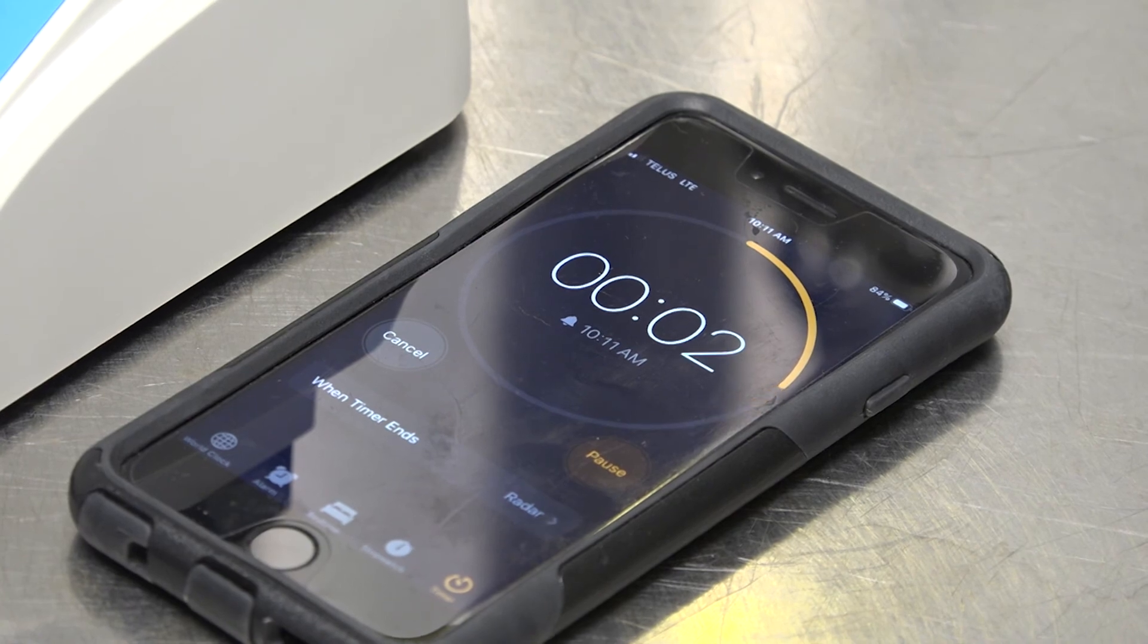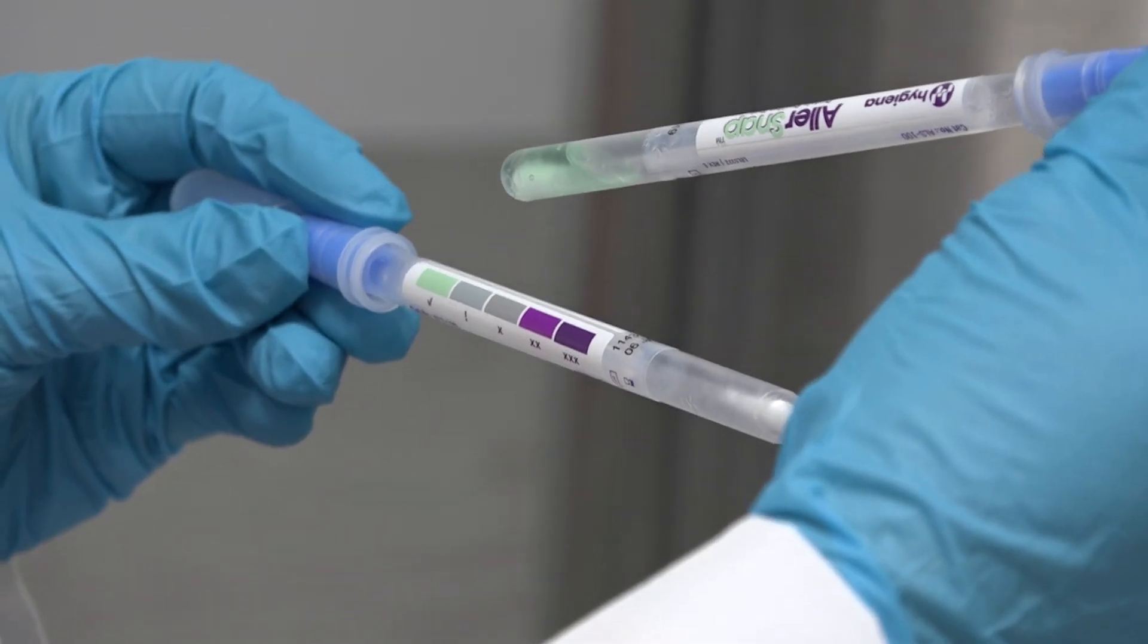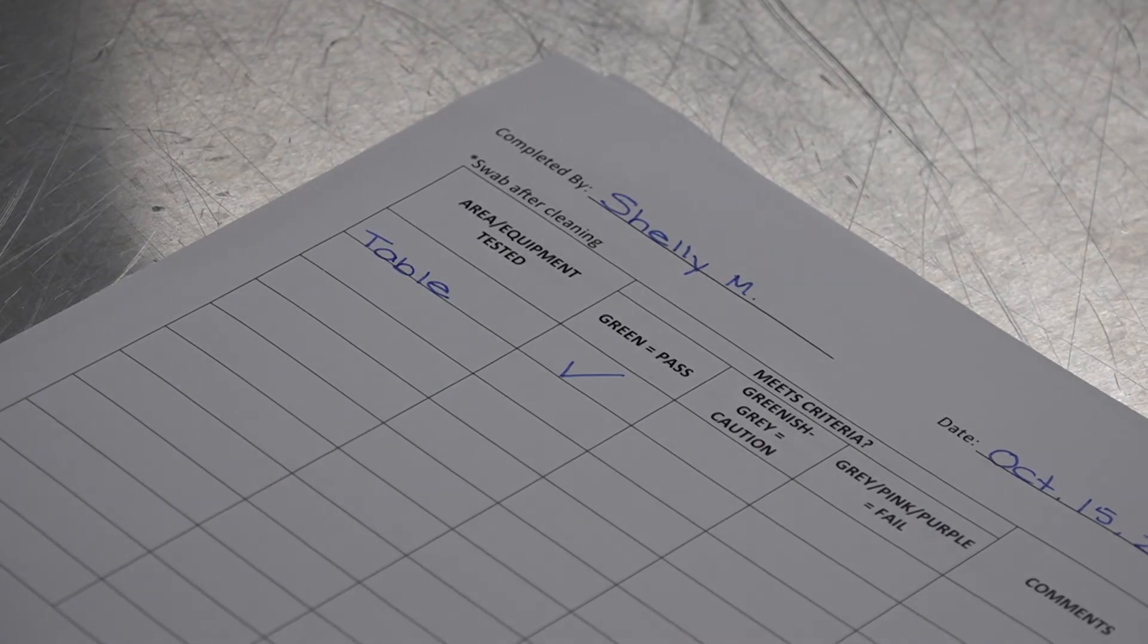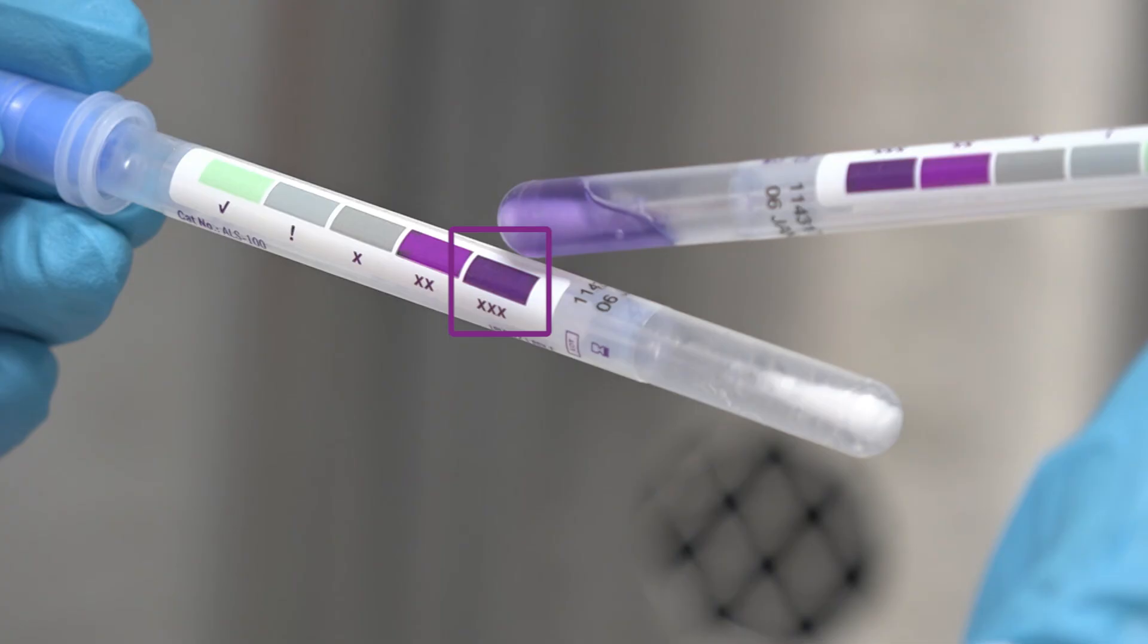Step number ten, when the time is up, compare the color of the liquid to the color chart label on the side of the swab. Record results on the monitoring record. Green means the surface is clean and purple means there is protein remaining on the surface.